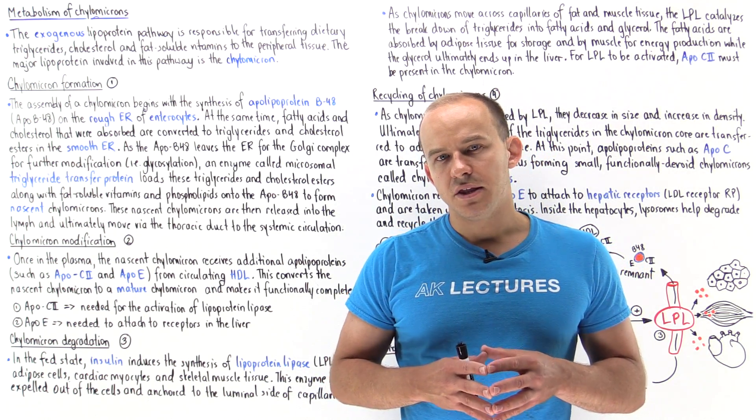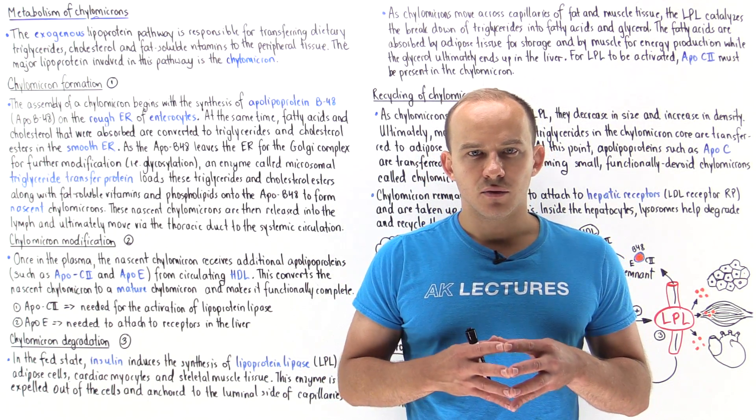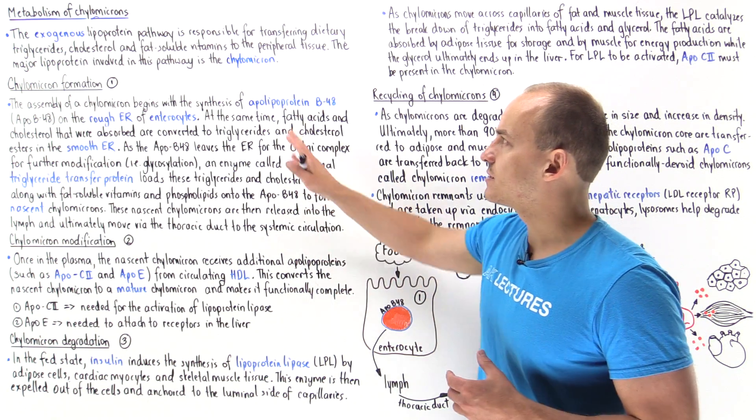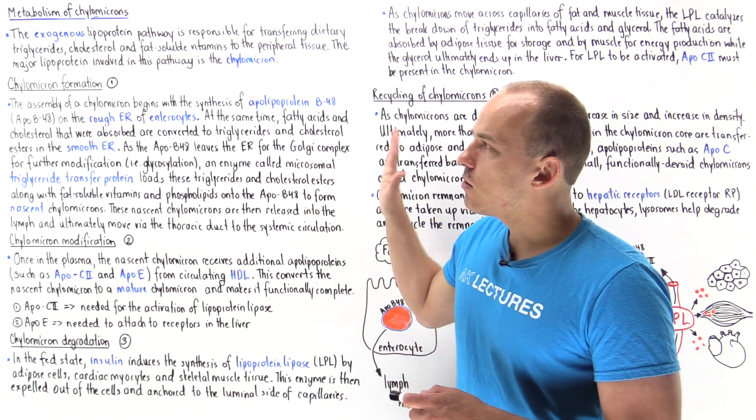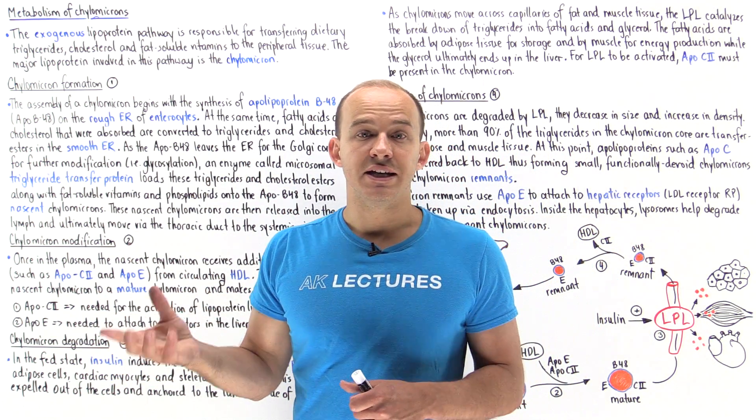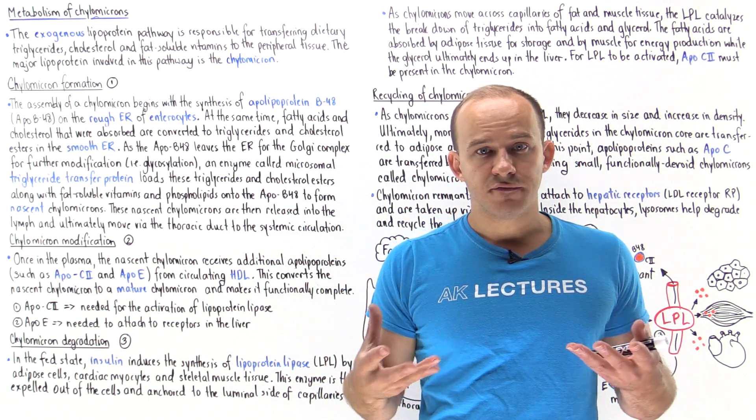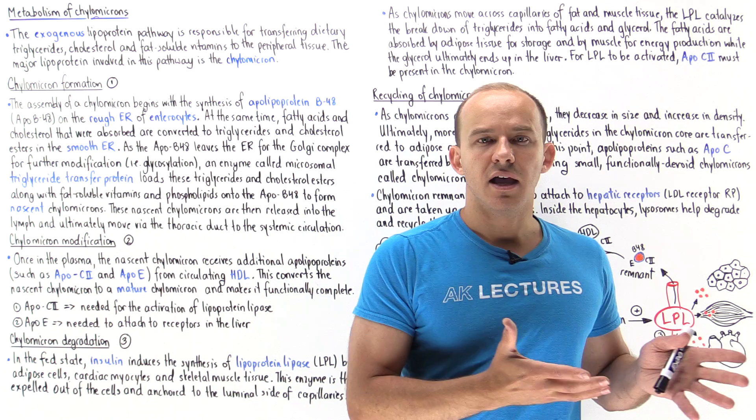The next thing we're going to talk about is the exogenous lipoprotein pathway, and this pathway utilizes chylomicrons as their central lipoproteins. This is the pathway that ultimately is responsible for transferring the fats in our diet to the cells of the body.